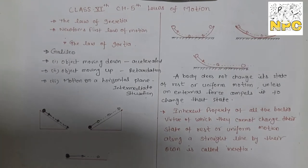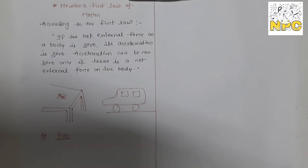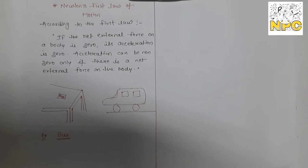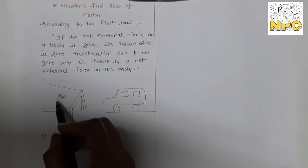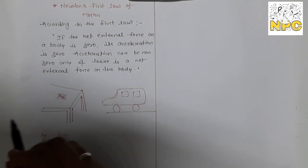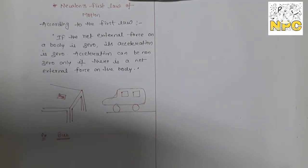Newton's first law of motion is based on Galileo's law of inertia — Galileo's concept is used in the first law. According to Newton's first law, if the net external force on a body is zero, its acceleration is zero. The body will be either at rest or in uniform motion. For example, a book resting on a table is not force-free — all forces acting on it cancel out, giving a net force of zero.